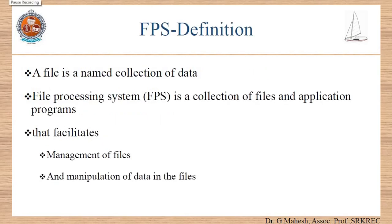FBS definition. Before going to the definition of FBS, let us see the definition of a file. A file is a named collection of data. For example, a.txt is a text file, a.doc is a document file, a.pptx is a PowerPoint file, a.c is a source C file, and a.exe is an executable file.